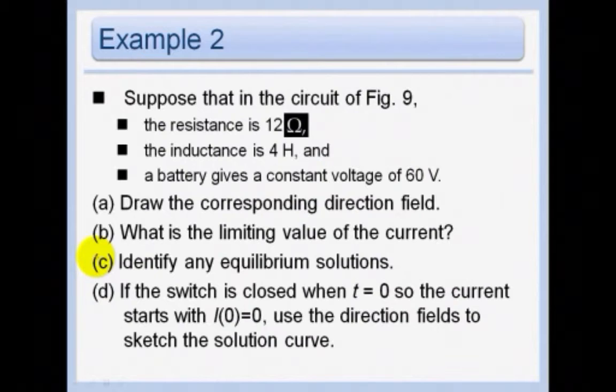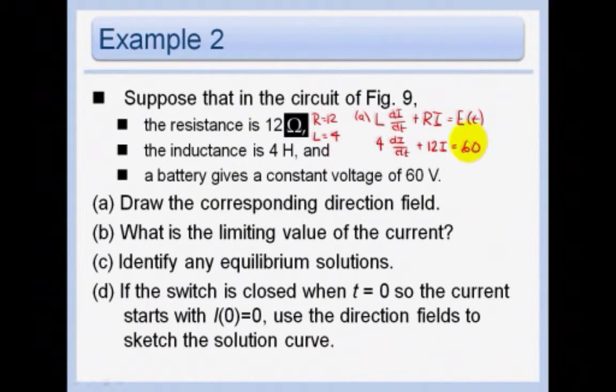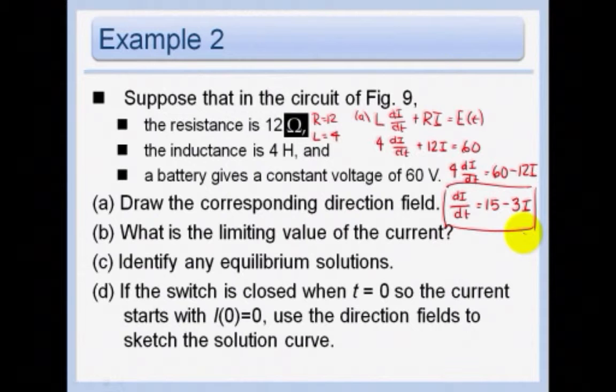Suppose that in the circuit of figure 9 the resistance is 12 ohms, the inductance is 4, the battery gives a constant voltage of 60. Draw a corresponding direction field. So all we have to do here is we know that R equals 12, L equals 4. And then we had our equation L DI DT plus Ri equals ET. Our L was 4. Our R was 12. So let's just solve for DI DT. So we have 4. Divide by 4. Okay, so now we can use that to go ahead and draw the direction field.